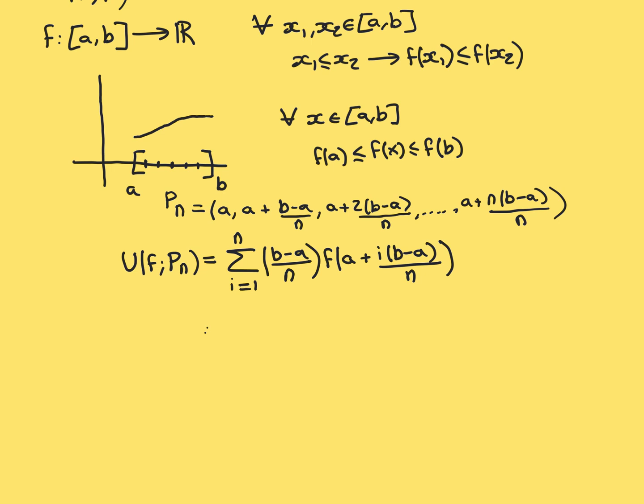Let's now consider what the upper Riemann sum for our function over one of these partitions P_N is going to be. The formula I've got here applies for all of them, no matter what N you pick — it's a general formula that works for all of them. N is a natural number.